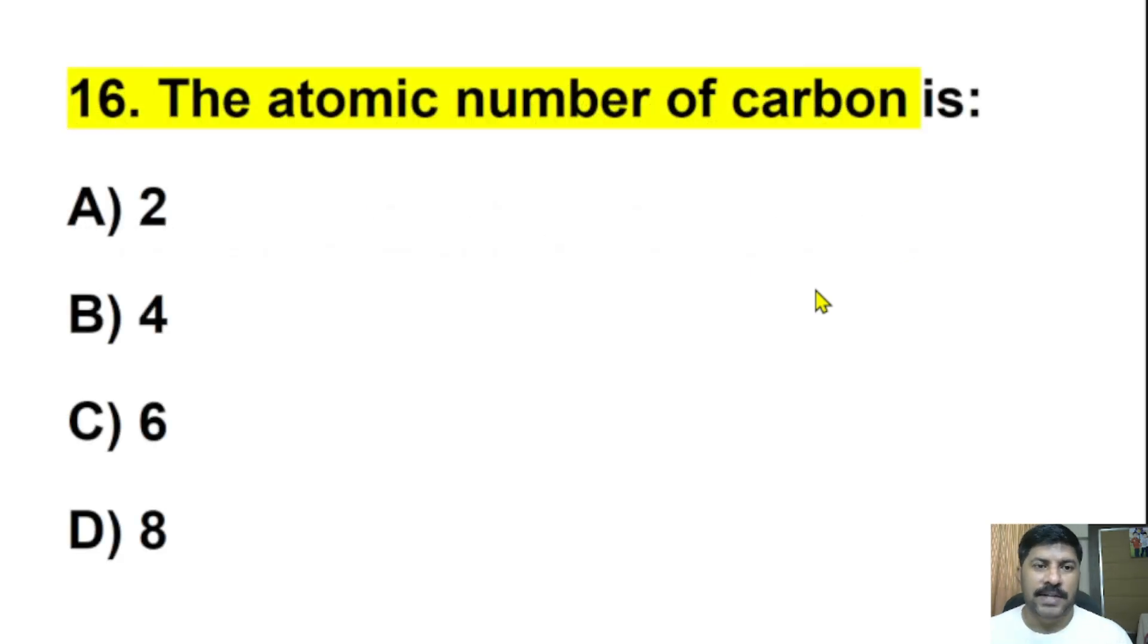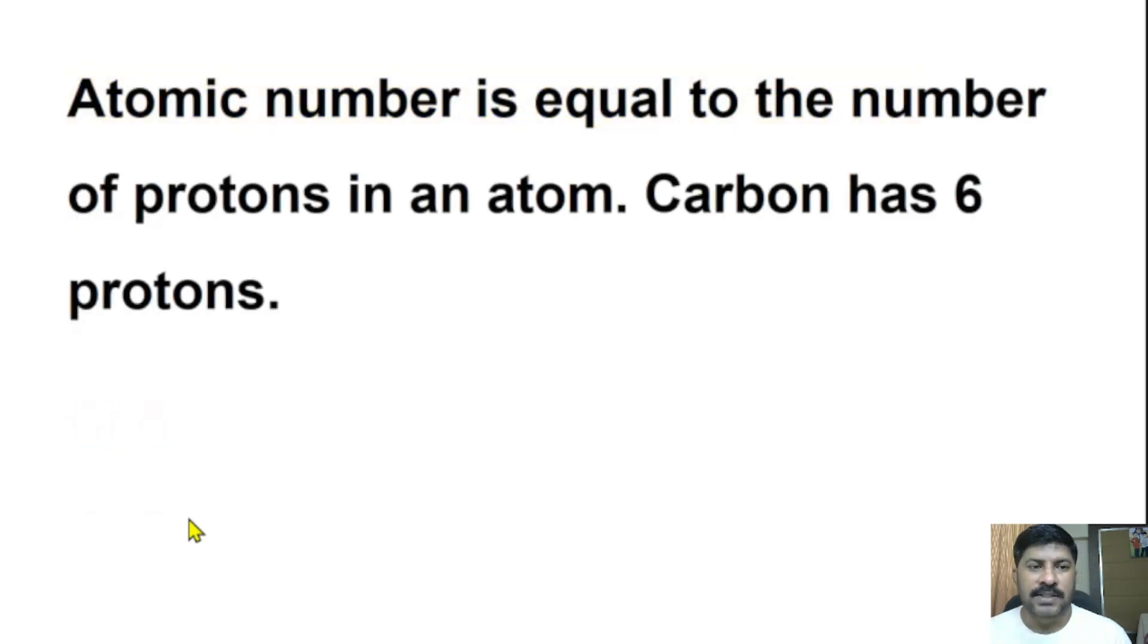Sixteenth question: The atomic number of carbon is 2, 4, 6, or 8? The correct answer is 6. The atomic number is equal to the number of protons in an atom. Carbon has 6 protons, so its atomic number is 6.